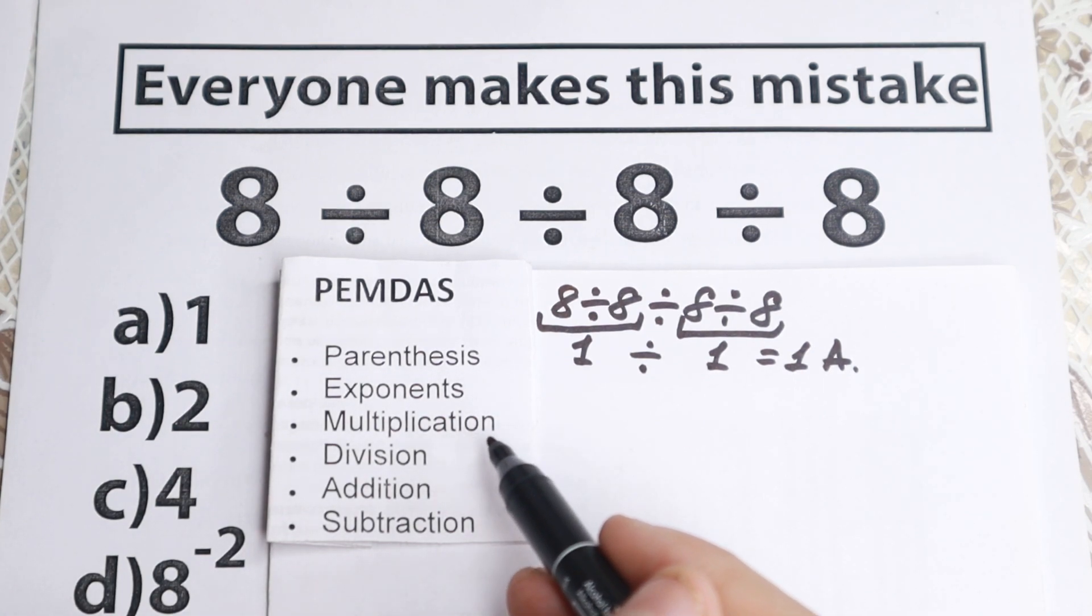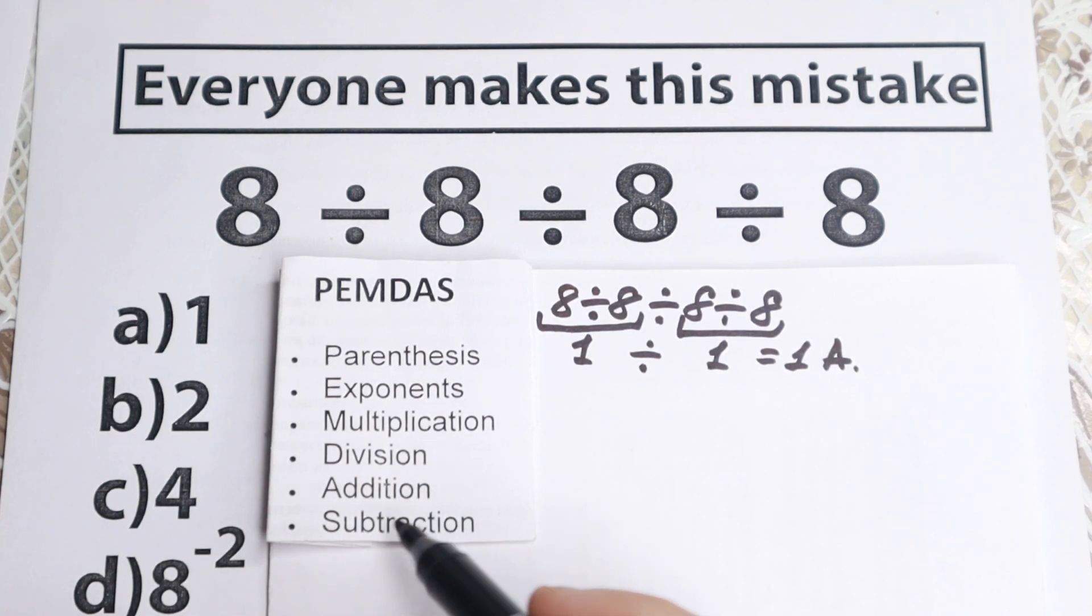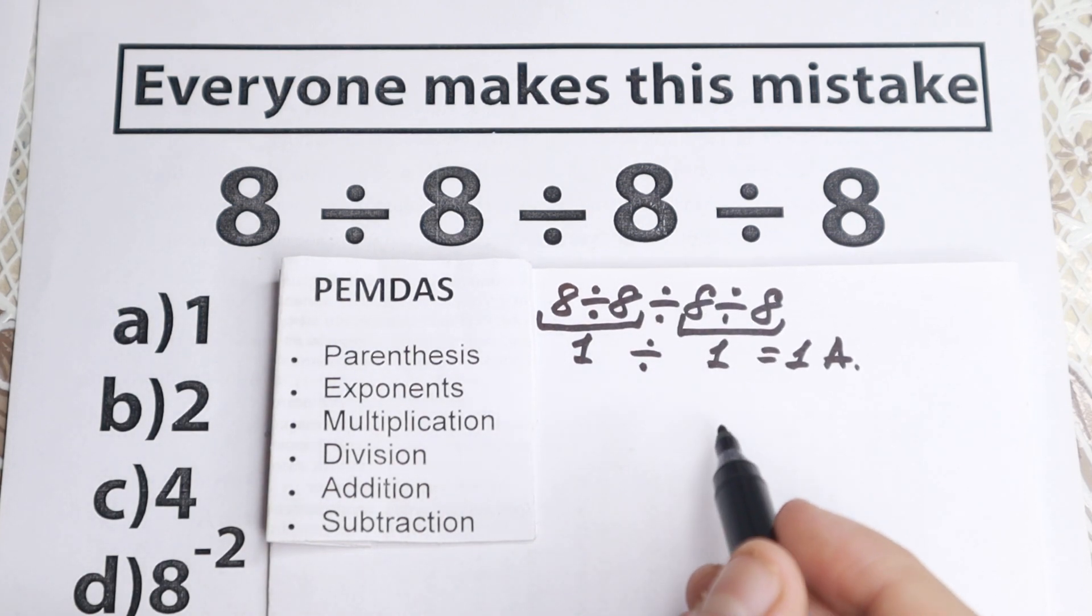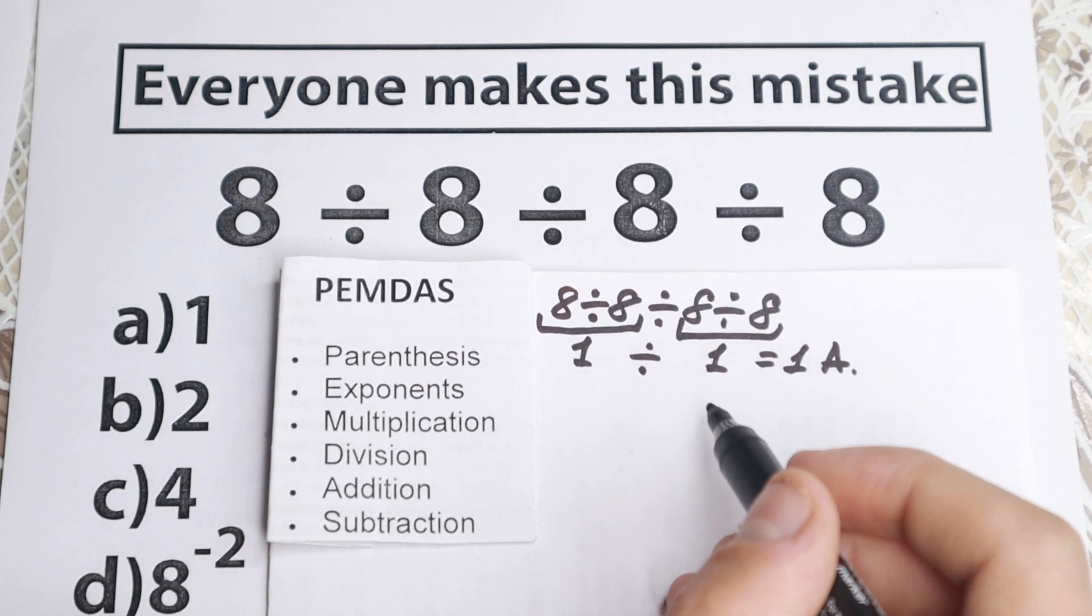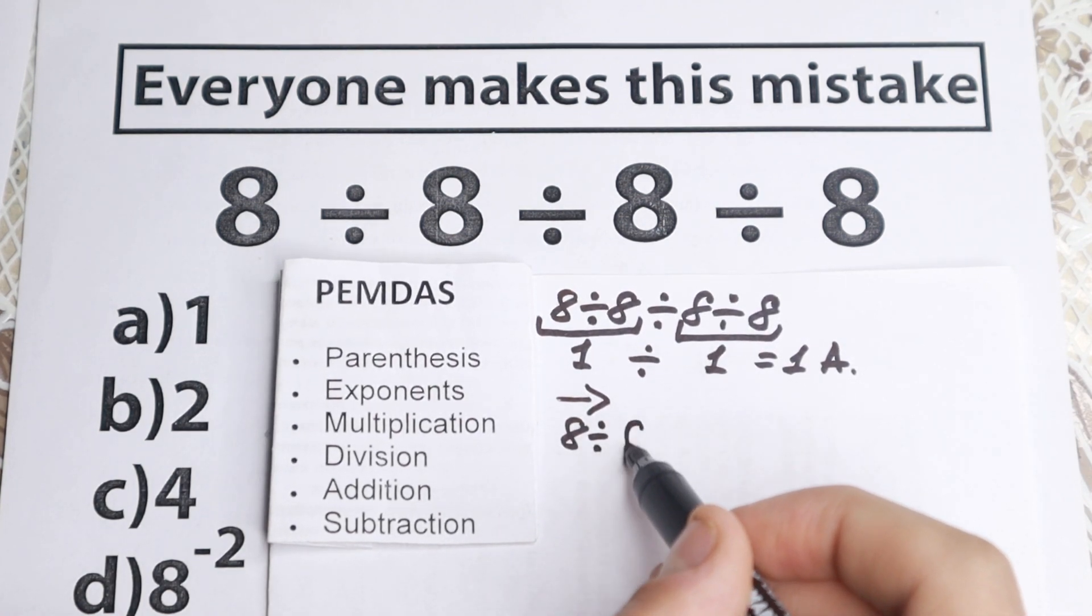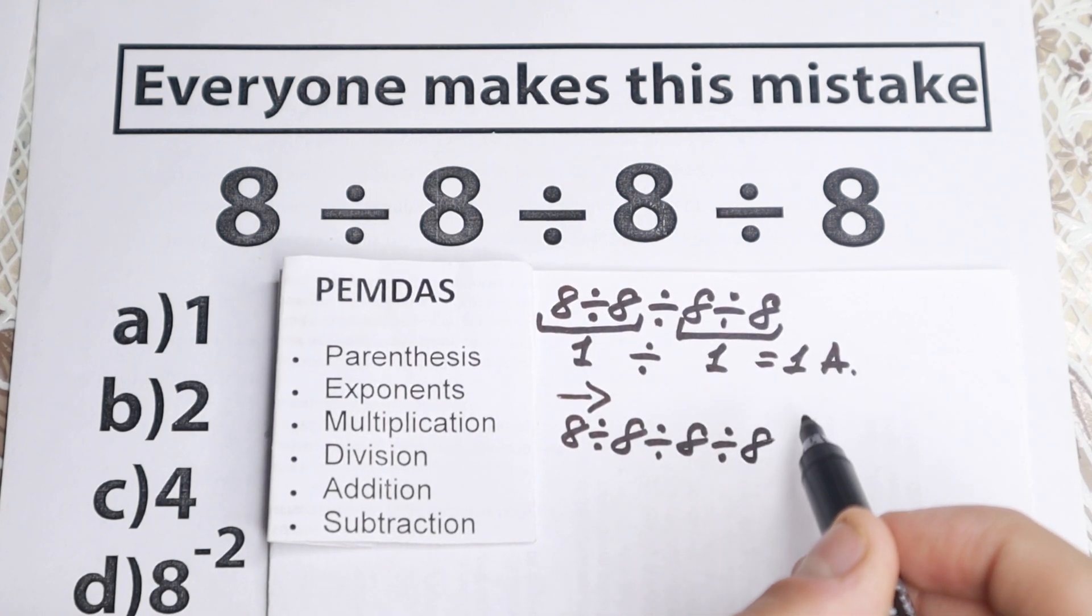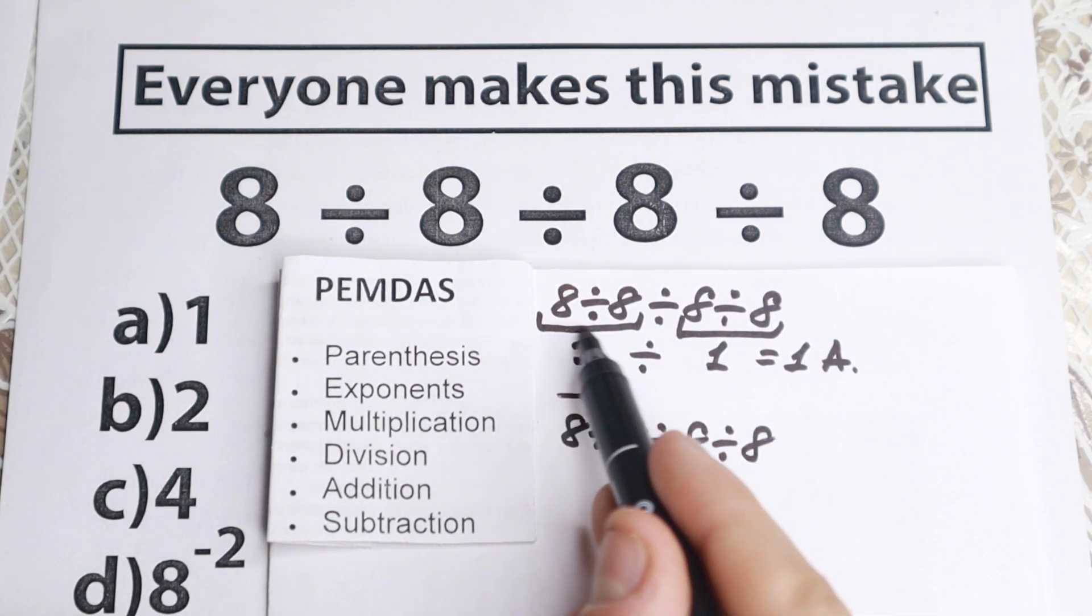The next step, multiplication. So we don't have multiplication, we have division, and we don't have addition and subtraction, so moreover, we don't have this step, this group. So we still have division, but then you need to go from left to right. So let's rewrite this question. 8 dividing by 8, dividing by 8, and dividing by 8.